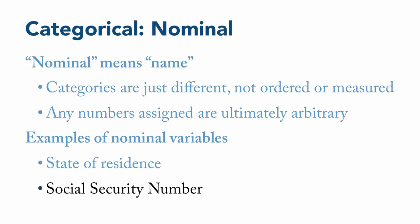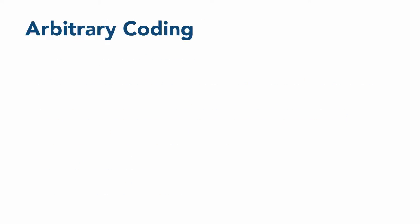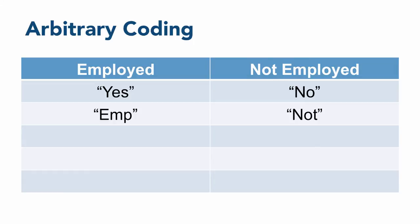This might make more sense with an example of arbitrary coding. We'll start by creating an empty table. And then we'll label the two columns as employed and not employed, because we may want to record that information for people in the study. And our first choice is to write the words yes and no to indicate whether a person is employed. But we could also use the abbreviations emp for employed and not for non-employed. Similarly, we could use numbers such as one for employed and two for non-employed, because those might be the order that the options show up. Or we could use plus one for employed and minus one for non-employed as a way of showing positive and negative outcomes.